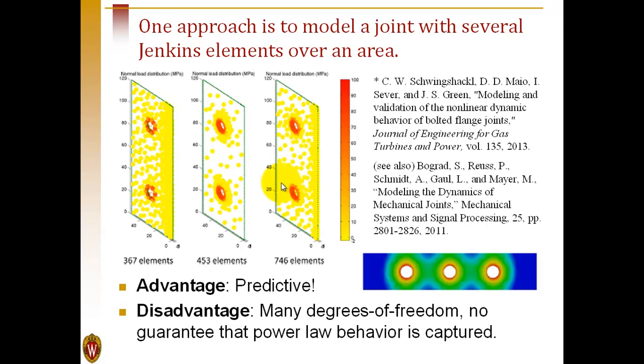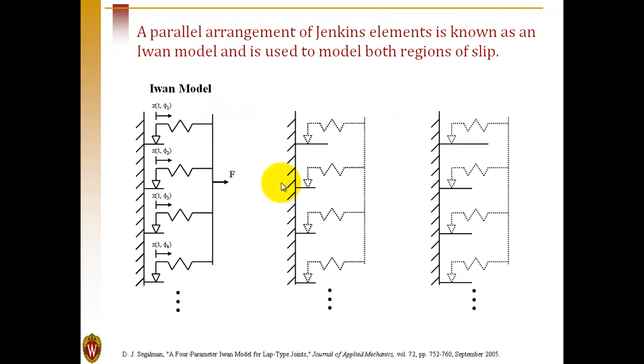The IWAN model is an alternative where we model the entire joint also with a collection of sliders, but we choose those sliders in a different way. They aren't actually distributed physically in space. Imagine that we have this collection of sliders, and each one has a different strength. If we apply a small load, we can get micro-slip, where some of the sliders slip and the others remain stuck.